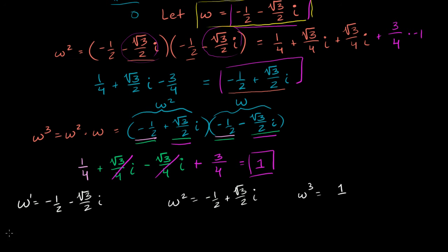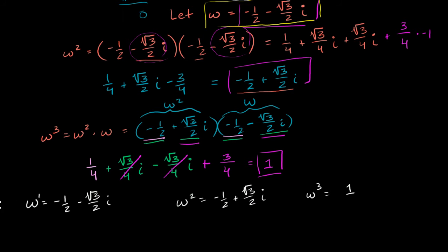What is omega to the fourth power? Omega to the fourth is omega cubed times omega, so it's going to be omega again — the same as omega to the first power. What's omega to the fifth? It's omega times the fourth power, which is omega times omega, so it equals omega squared. And omega to the sixth? That's the same as taking omega cubed and squaring it, so it's also equal to 1.